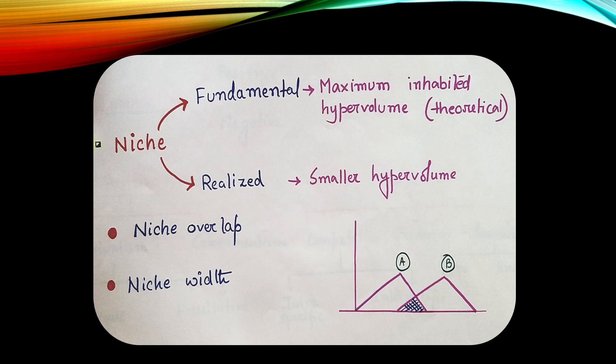Members of a species actually don't live in the fundamental niches. They are rather found in realized niche. Fundamental niche gives an account of various ecological roles of a species, but realized niche specifically refers to what it actually does.